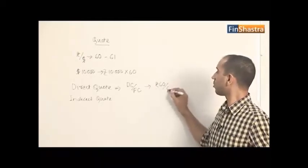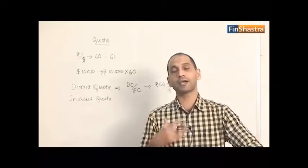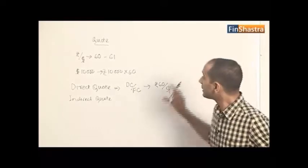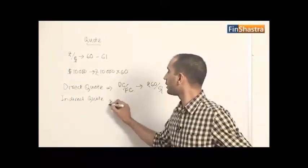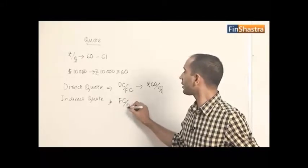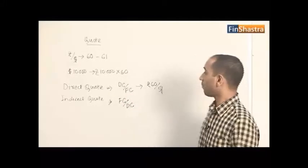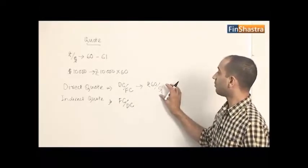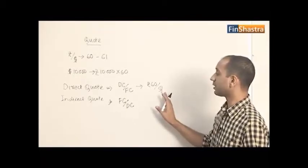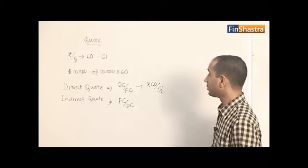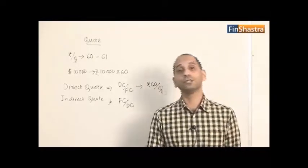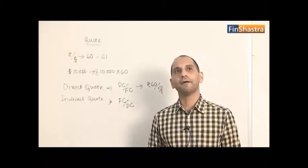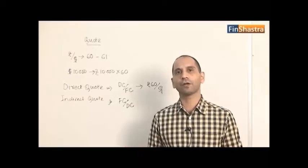Rupees 60 per dollar is a direct quote from the perspective of an Indian resident. From a US resident's perspective, this is an indirect quote, because an indirect quote is defined as foreign currency divided by domestic currency. For the US investor, the rupee is a foreign currency and the dollar is the domestic base currency — so this would be an indirect quote for the US investor.